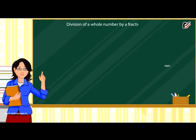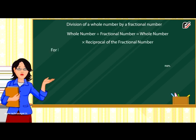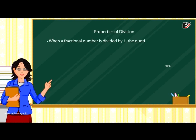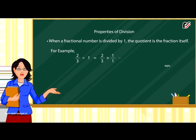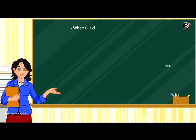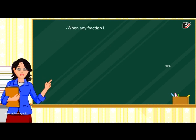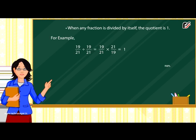Division of a whole number by a fractional number: whole number divided by fractional number equals whole number multiplied by the reciprocal of the fractional number. For example, 4 divided by 1 by 3 equals 4 multiplied by 3, which equals 12. Properties of division: when a fractional number is divided by 1, the quotient is the fraction itself — e.g., 2 by 3 divided by 1 equals 2 by 3. When 0 is divided by a fraction, the quotient is 0 — e.g., 0 divided by 7 by 9 equals 0. When any fraction is divided by itself, the quotient is 1 — e.g., 19 by 21 divided by 19 by 21 equals 1.